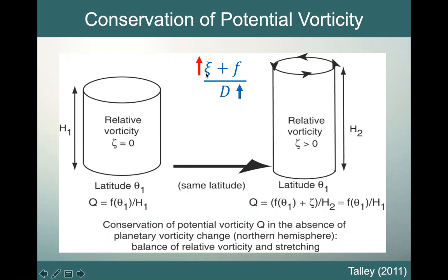So our relative vorticity must increase, going from zero to something greater than zero. Take out your right hands, put your thumb upwards, and look at the direction your fingers are curling — they should be curling in the counterclockwise direction. So we end up with a positive relative vorticity, or a counterclockwise rotation of our water column.